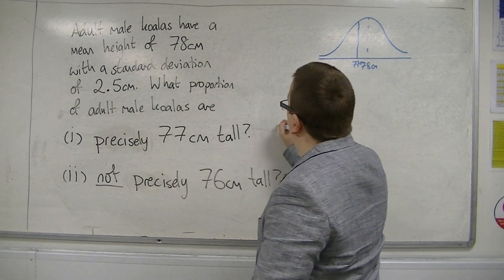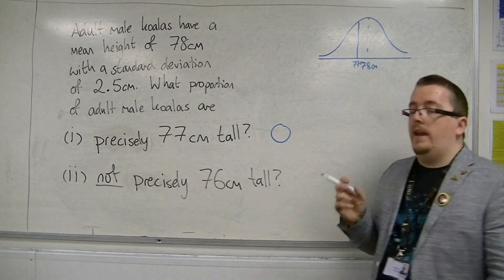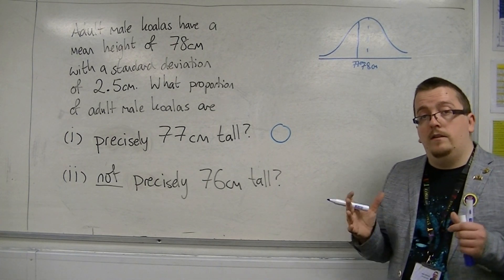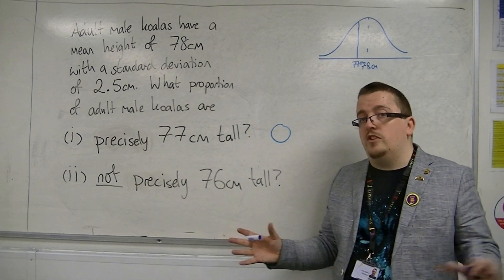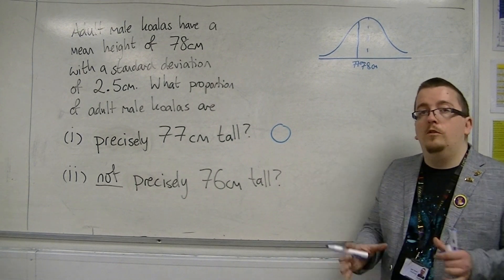So whenever you're looking for a precise inequality in a normal distribution, or a continuous distribution in general, it will be zero.